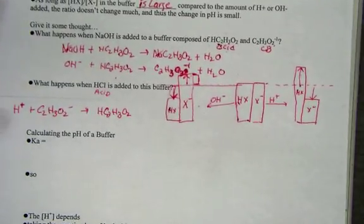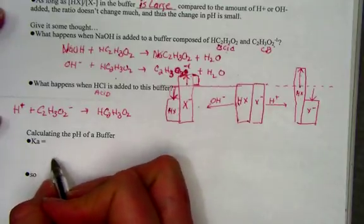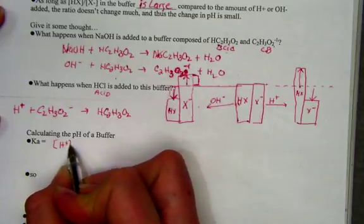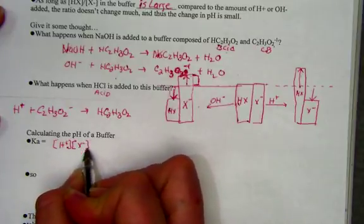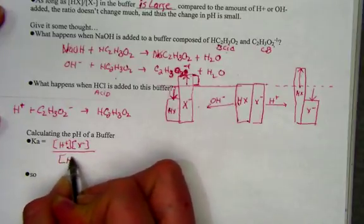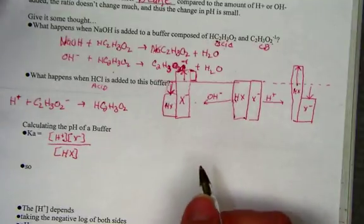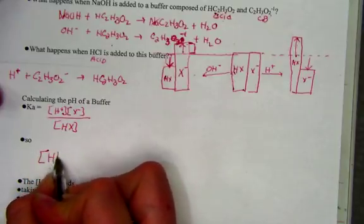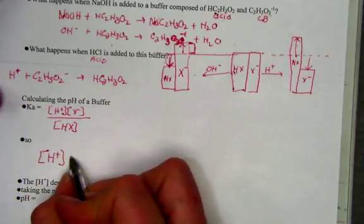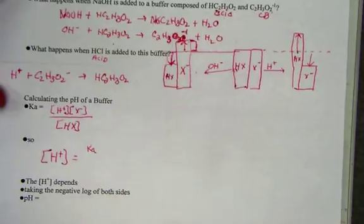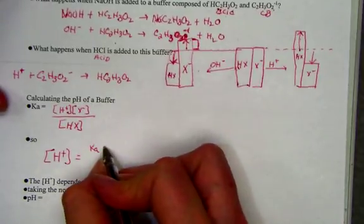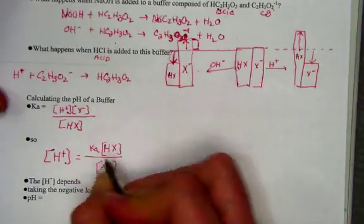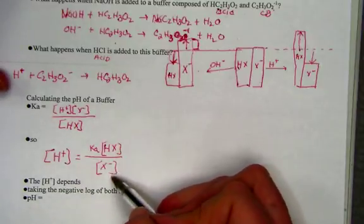To calculate the pH of a buffer, we revisit our initial equation for Ka. I remember Ka is equal to the products over reactants. So we have H plus times X negative all over HX, where this is true for any weak acid. We also rearranged to solve for the hydrogen ion, and thus pH, by showing it was the same as writing, Ka times the hydrogen X over X negative, the conjugate acid base pair.